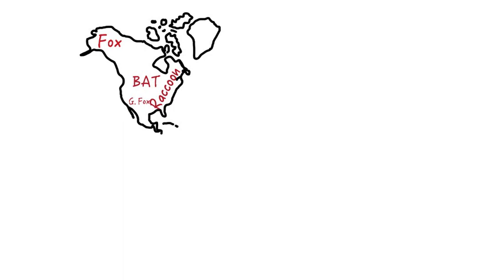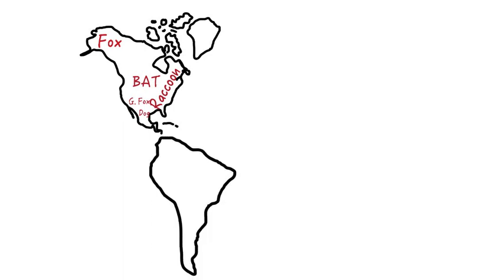In the last 30 years, raccoons have become a vector of great significance. Canine rabies exists in Mexico with the potential to spread northward. The vampire bat is an important reservoir in Latin America, and has been associated with rabies in cattle.